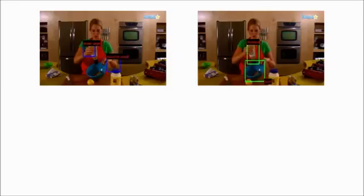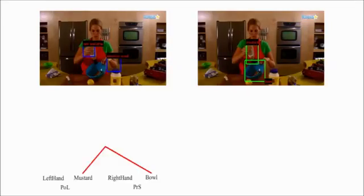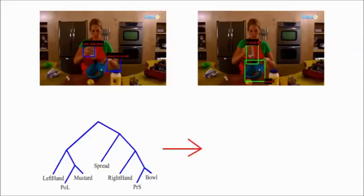The vision process first detects the hands and classifies the hand grasp, seen on the left. Other processes detect the objects, here the mustard in the left hand and the bowl in the right hand, seen on the right.